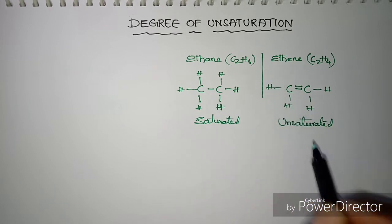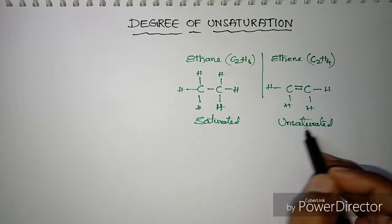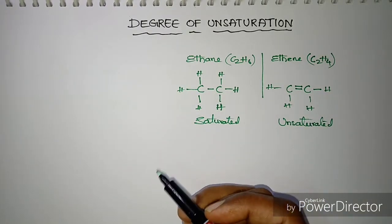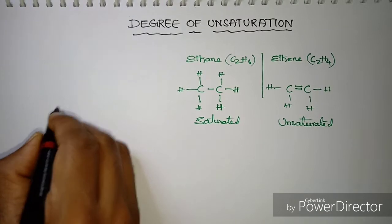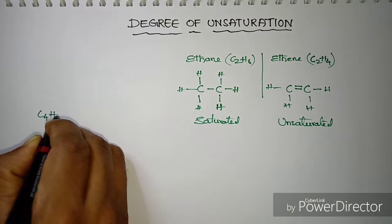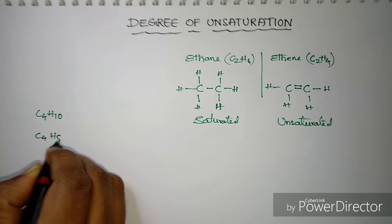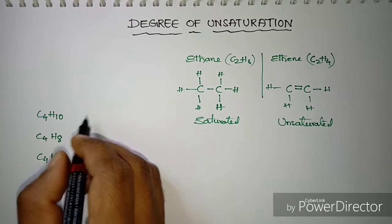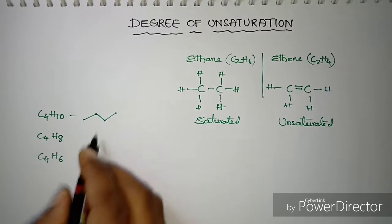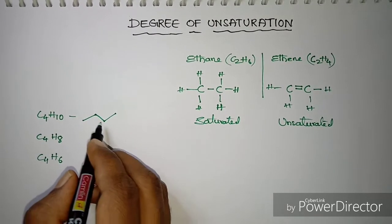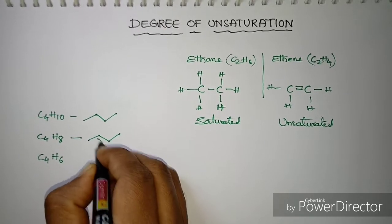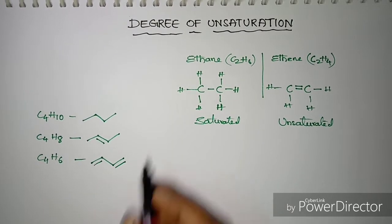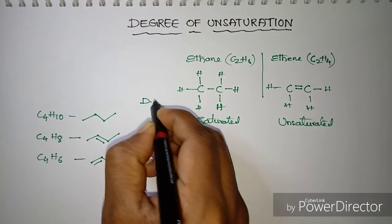Now, degree of unsaturation — calculating the quantum of unsaturation in a given compound is known as degree of unsaturation. Let's look at a few examples: C4H10, C4H8, and C4H6. I'll give their structures. C4H10 is represented in a dashed form as this, C4H8 as this, and C4H6 looks like this.